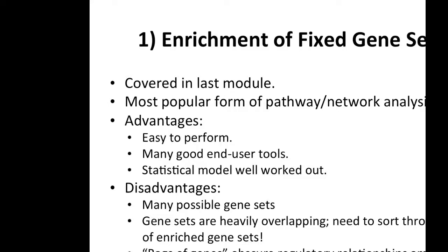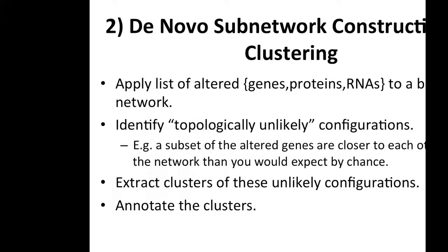Gene set enrichment is by far the most popular form of pathway and network analysis because it's easy to perform, there are lots of good end-user tools, and the statistical models are well worked out. Disadvantages are that there are many possible gene sets, you often get many interrelated processes, and you need tools like the enrichment map Gary talked about to sort through them. The bags-of-genes metaphor also discards regulatory relationships among genes.